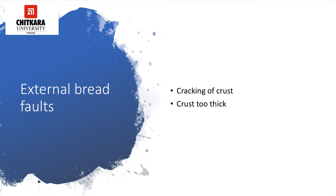The causes for cracking of crust include: dough skinning before baking, short process of bread preparation, over proofed dough, or uneven baking temperature. The causes for crust to be too thick include: poor quality or too strong flour, too little sugar or fat, less diastatic activity in the flour, over fermented or old dough, too low oven temperature, over baked, and low humidity in the oven or proofing area.